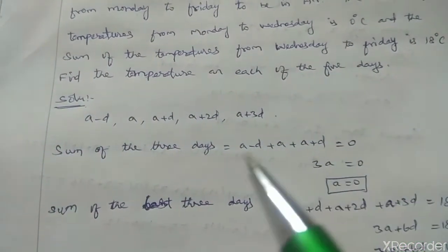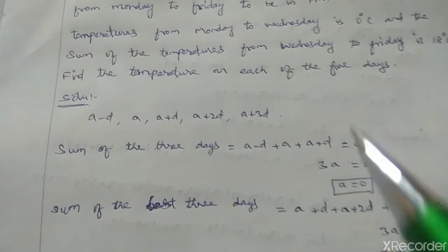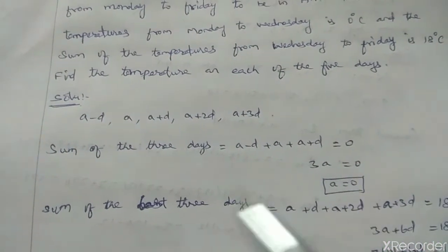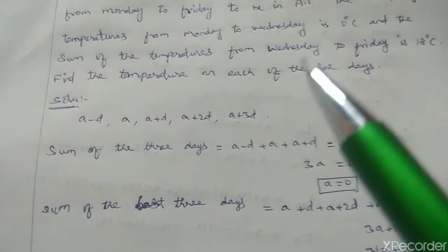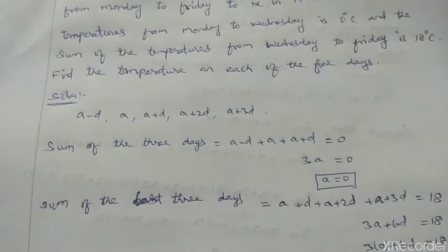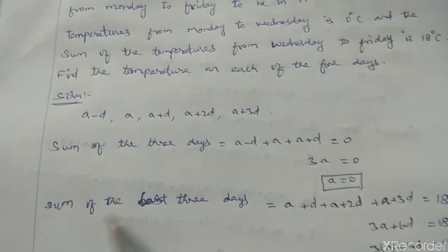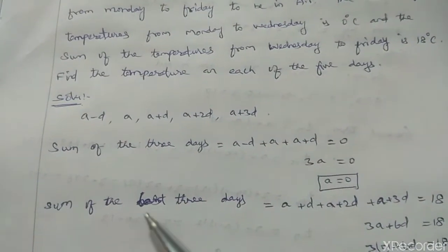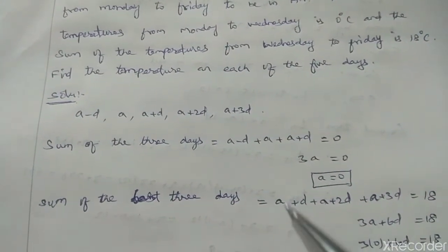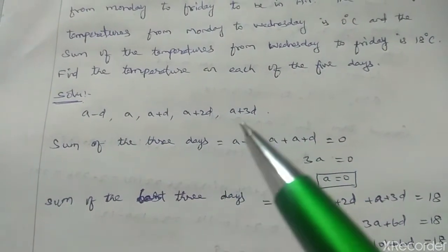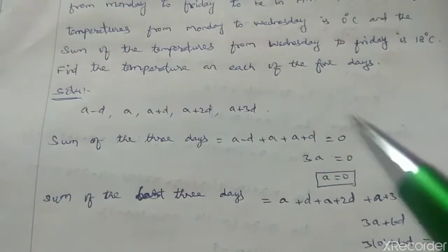Minus D plus D cancel, three times a: 3A equal to 0. Then a equal to 0. Next, sum of Wednesday to Friday. The sum of the last 3 days equal to a plus D plus a plus 2D plus a plus 3D equal to 18.